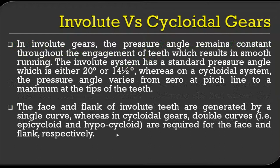In involute gears, the pressure angle remains constant throughout the engagement of teeth, which results in smooth running. The involute system has a standard pressure angle, which is either 20 degrees or 14.5 degrees. In the cycloidal system, the pressure angle varies from zero at the pitch line to a maximum at the tip of the teeth. So in involute tooth profiles, a standard pressure angle is considered for the entire profile, whereas in cycloidal tooth profiles, different pressure angles apply to the same tooth.